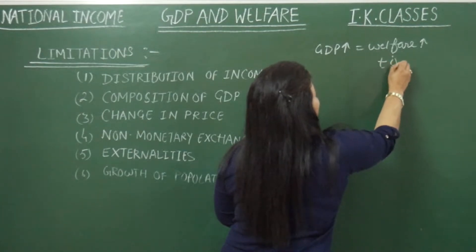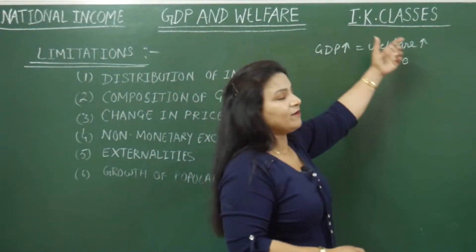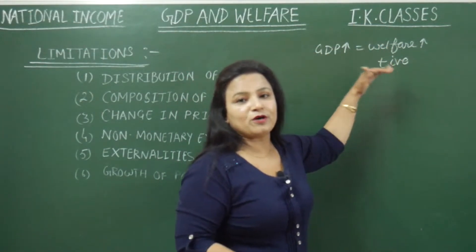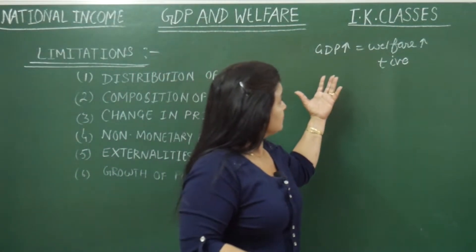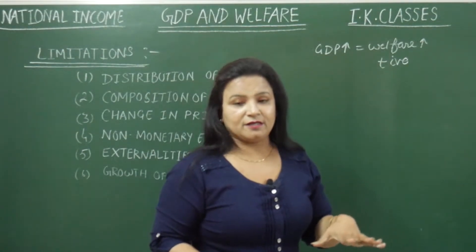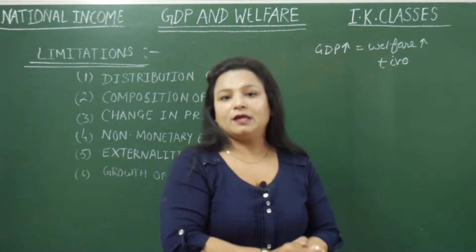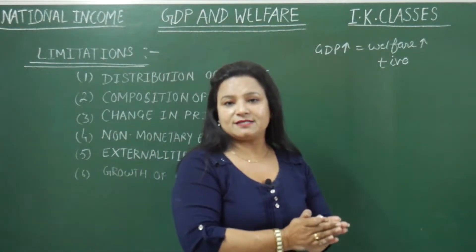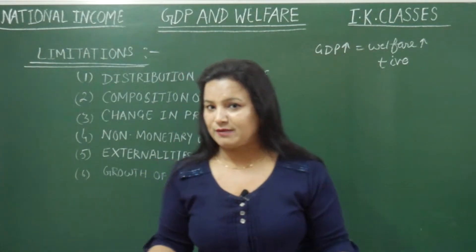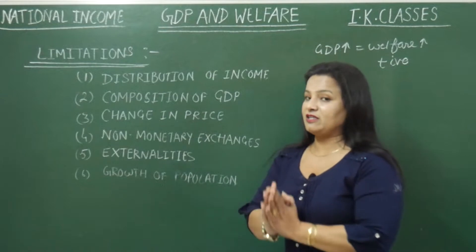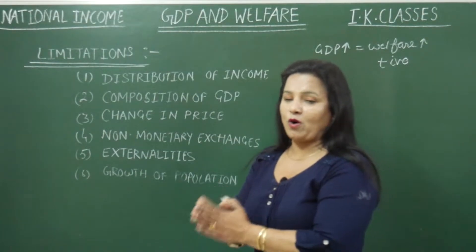This shows a positive relationship — GDP rise leads to welfare rise. But this positive relationship is possible only to some extent. There are some limitations which show that there is not always a positive relationship between welfare and rise in GDP. These limitations are very important — they carry three to four marks weightage, and one or two points can be asked in the exam, so study each one carefully.